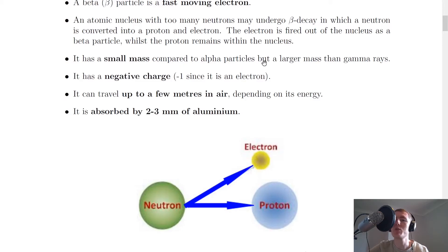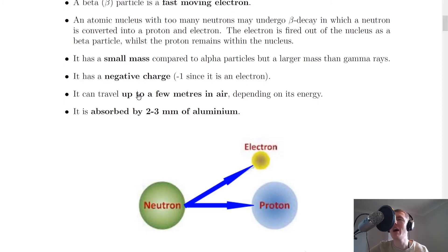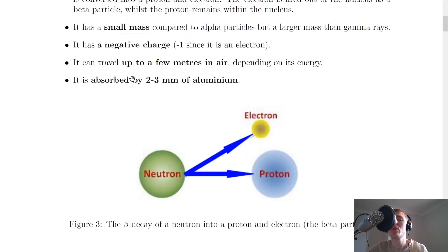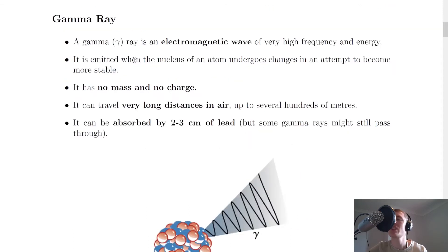The beta particle has a small mass compared to alpha particles but a larger mass than gamma rays, so it's in the middle in terms of mass. It has a negative charge — in particular a charge of minus one — since it is an electron, and electrons have a negative charge. It can travel up to a few meters in air depending on its energy, typically from tens of centimeters up to two or three meters.